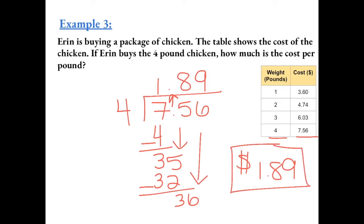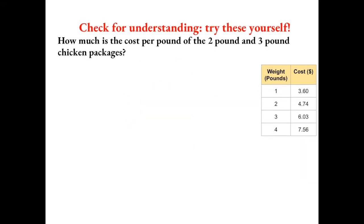So if you were to buy 1 pound of chicken, it would cost you $3.60. But if you get 4 pounds of chicken, you're getting each pound for $1.89. So you're actually getting a better deal. Try this one yourself to check for understanding, then resume the video to check your answer.